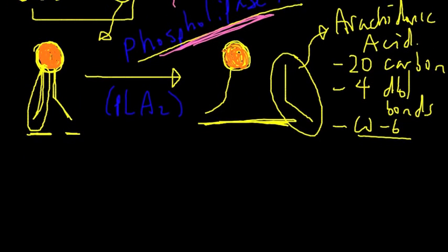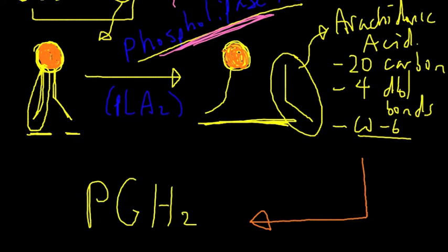But let's continue. So we have here formed arachidonic acid. The next step is really the conversion from arachidonic acid to PGH2, which we will talk about in a second.